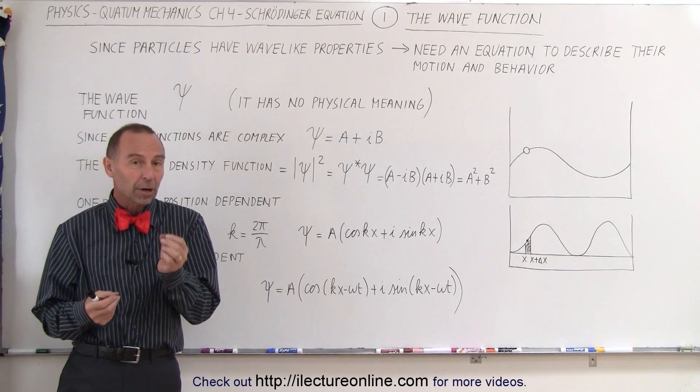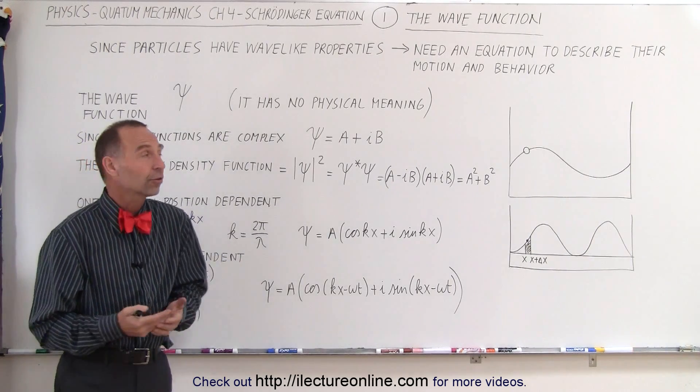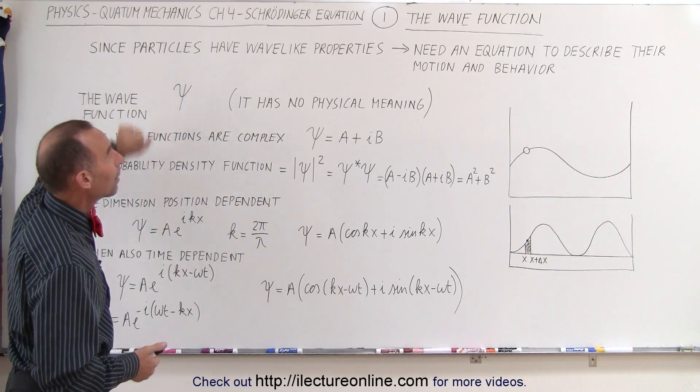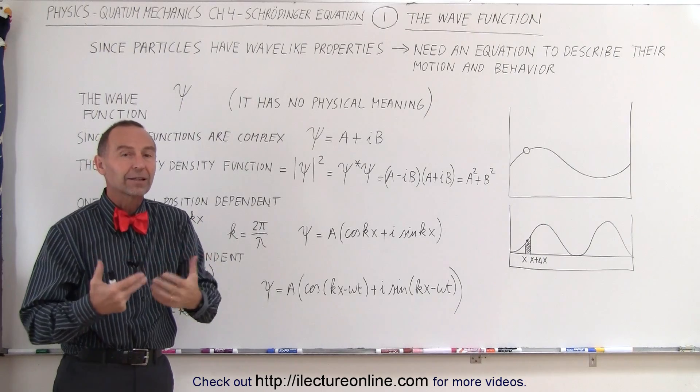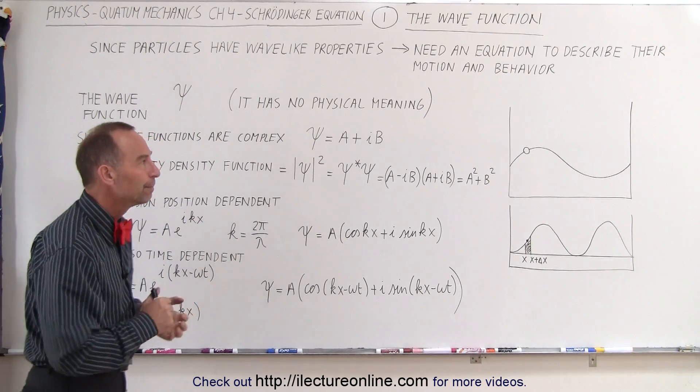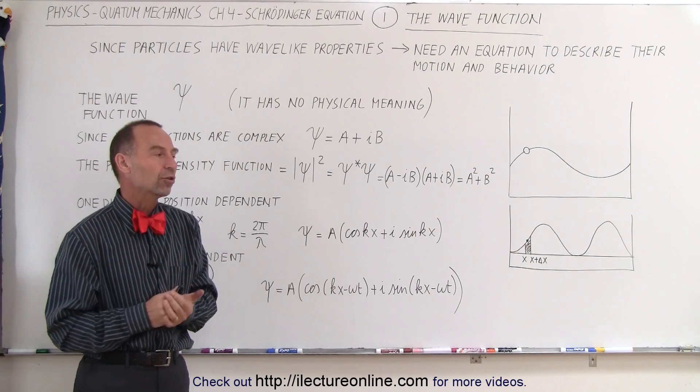As we have learned that small particles actually behave more like photons than they do like real particles, they have wave-like properties. We need an equation to describe how they move, how they react to forces around them. And so Schrodinger came up with his equation, now known as Schrodinger's equation.